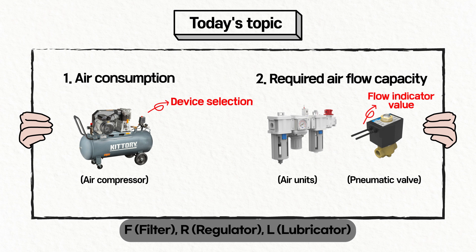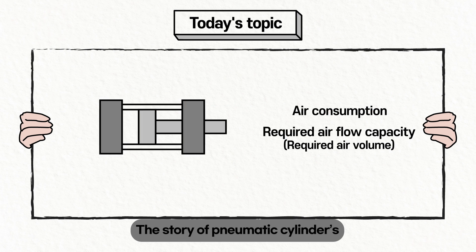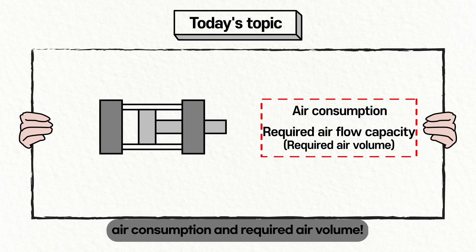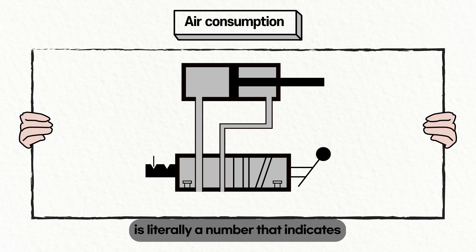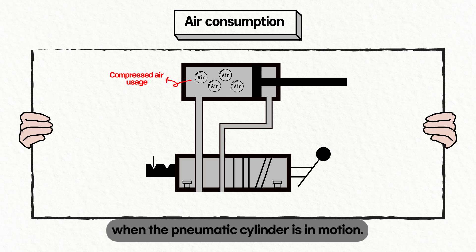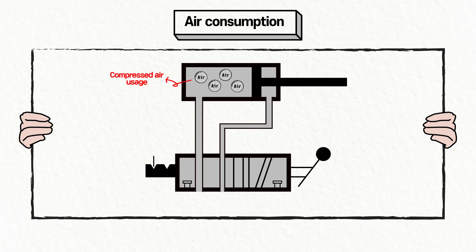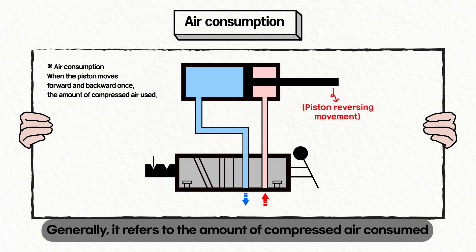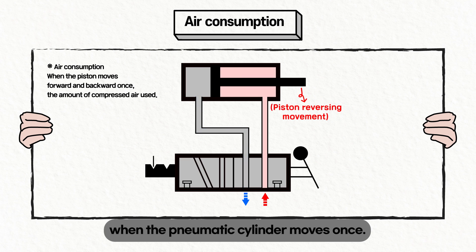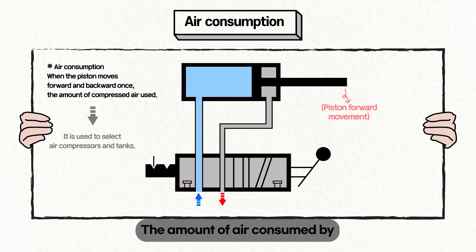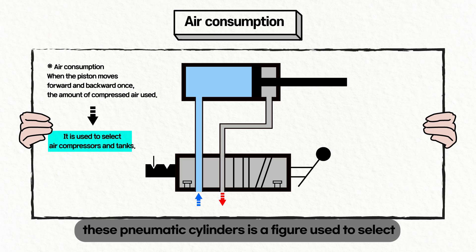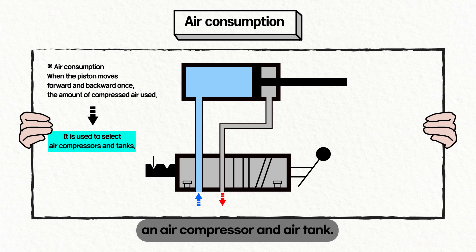Let's begin the story of pneumatic cylinders' air consumption and required air volume. The pneumatic cylinder's air consumption is literally a number that indicates how much compressed air is used when the pneumatic cylinder is in motion. Generally, it refers to the amount of compressed air consumed when the pneumatic cylinder moves once. This figure is used to select an air compressor and air tank.